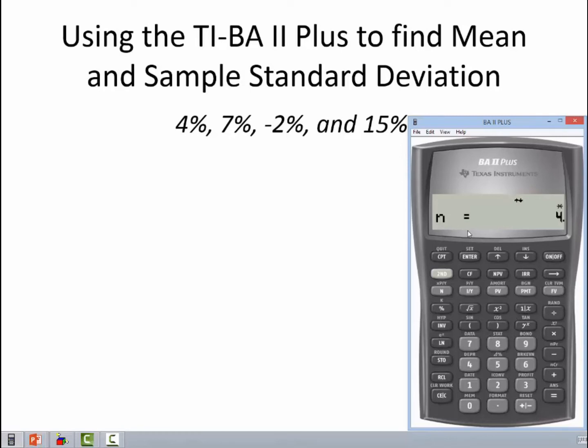Just ignore that. We're going to arrow down and see that we get a sample size of 4. 1, 2, 3, 4. So that looks fine so far. Arrow down. It says that our mean, or arithmetic average, is 6. That looks right.